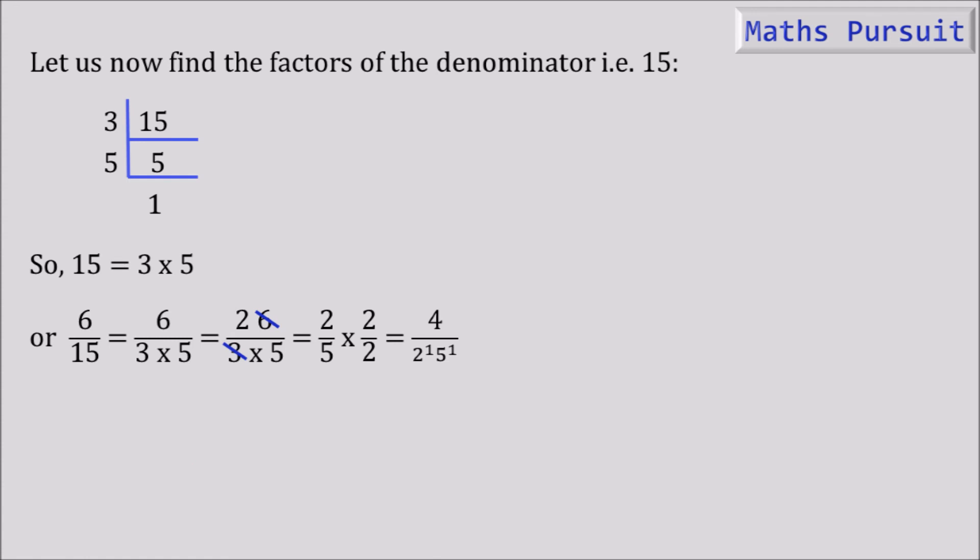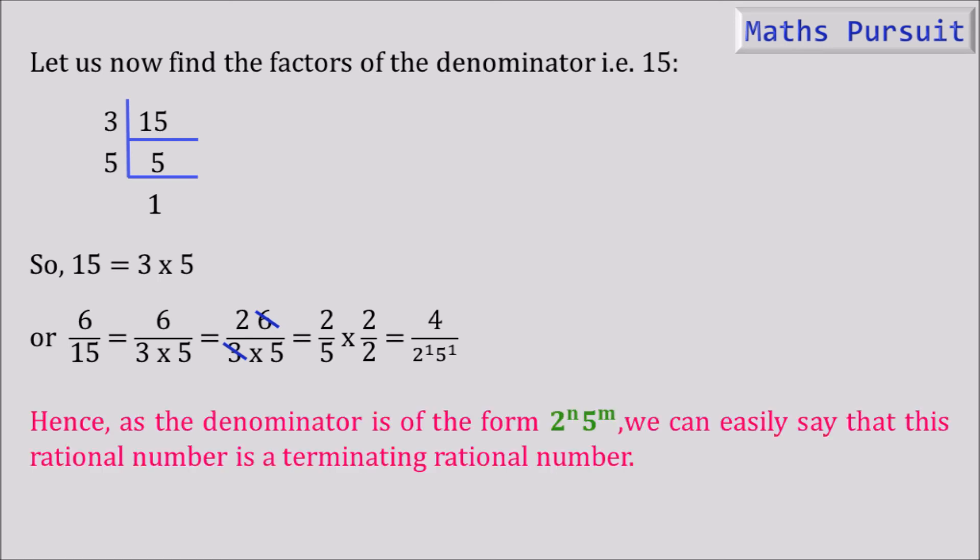Now we got the equation in the form 2 to the power n and 5 to the power m. It is very easy for everyone to know what exactly this tells. Hence, as the denominator is of the form 2 to the power n and 5 to the power m, we can easily say that this rational number is a terminating rational number.